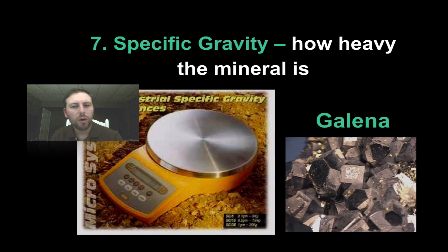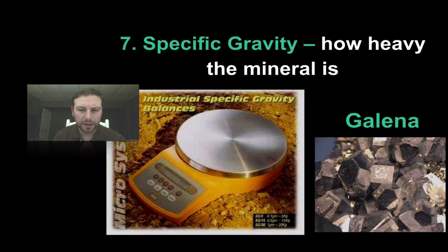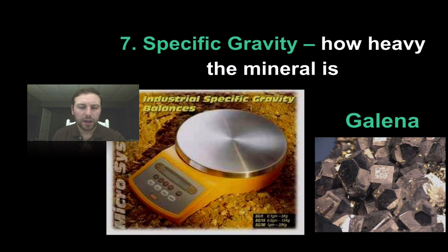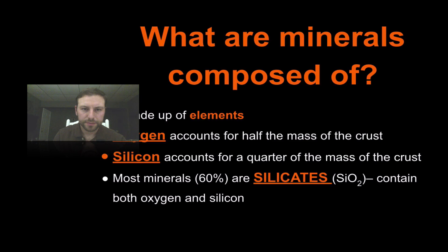We can also look at specific gravity, which is very closely associated with density — basically how heavy the mineral feels in your hand. Galena, for example, is extremely heavy and dense. I'll pass this sample around in class so you can feel it. This is another way specific gravity helps us identify minerals.